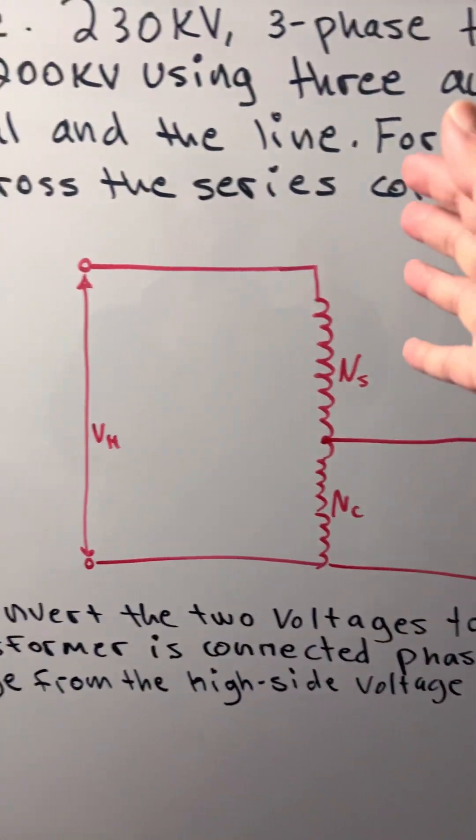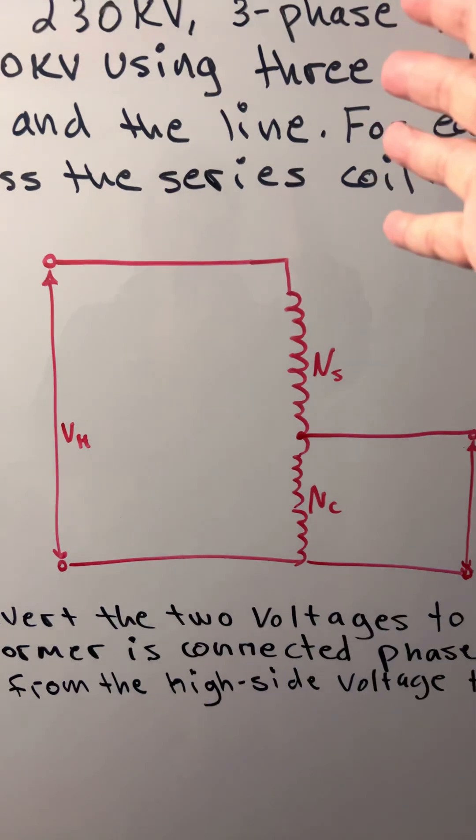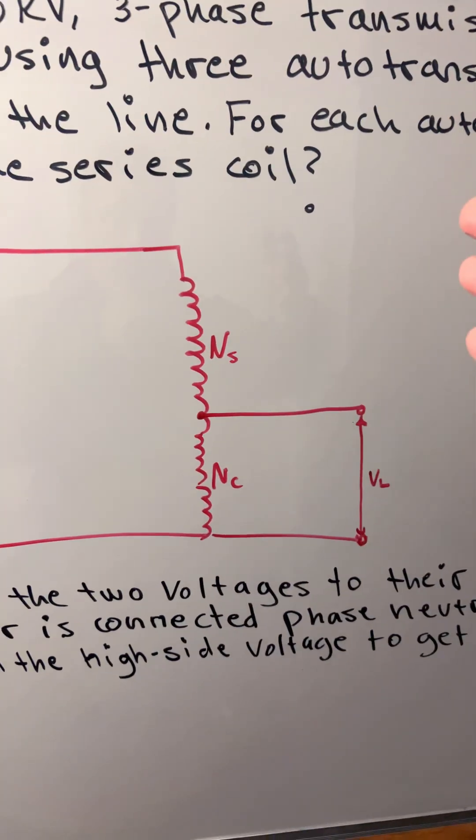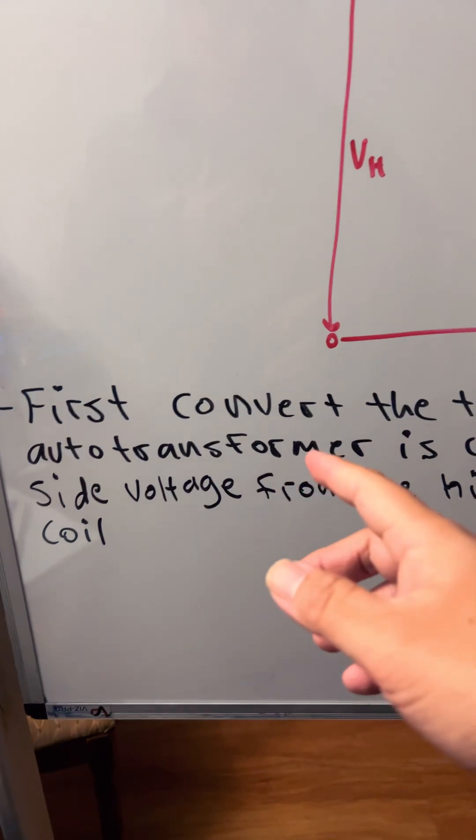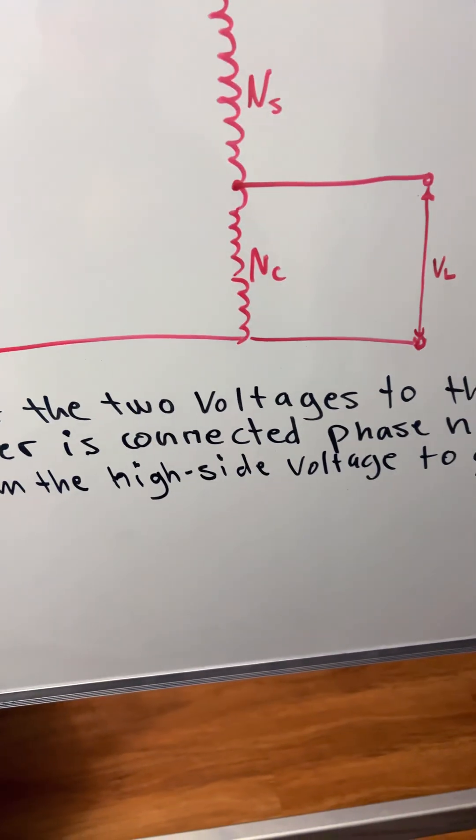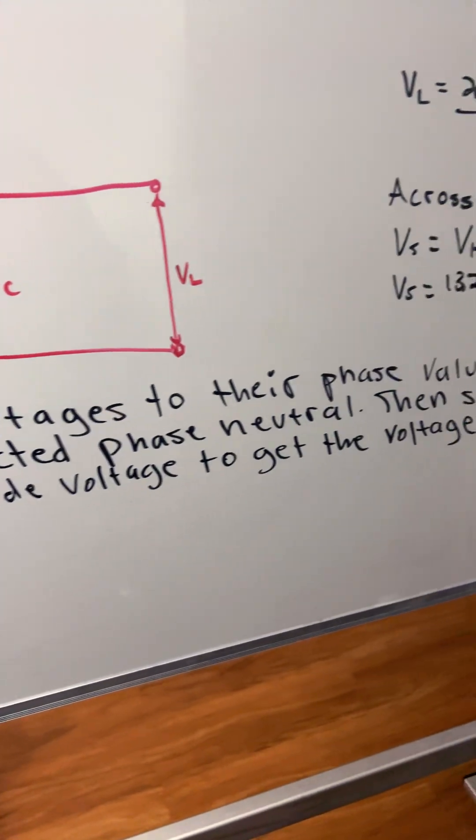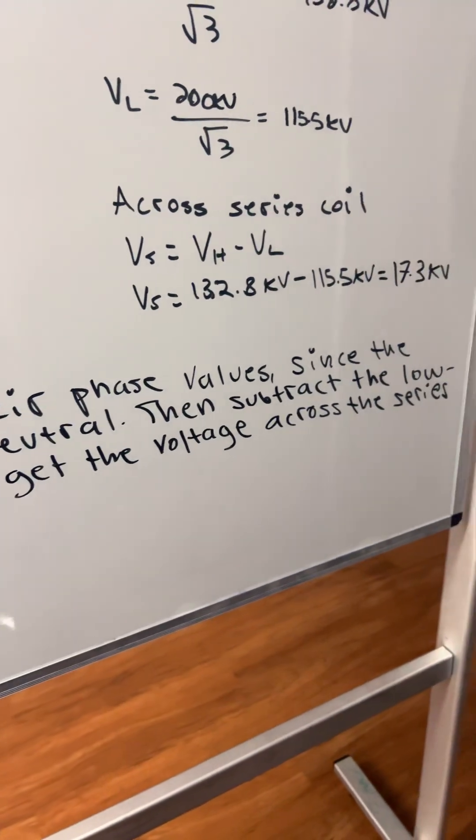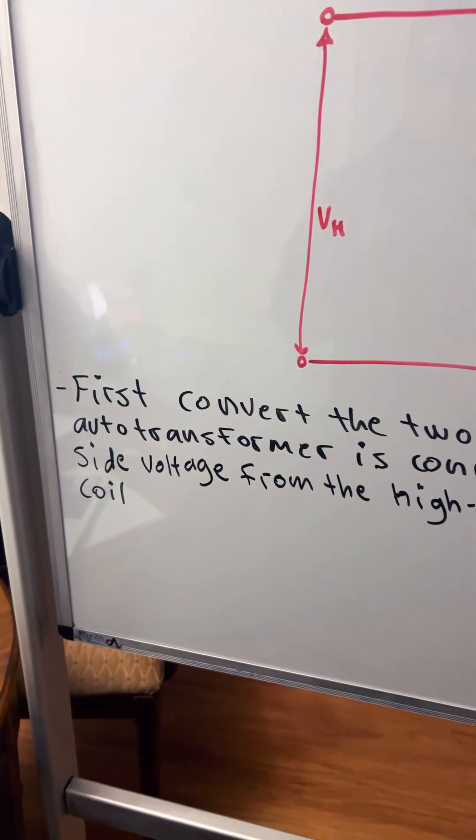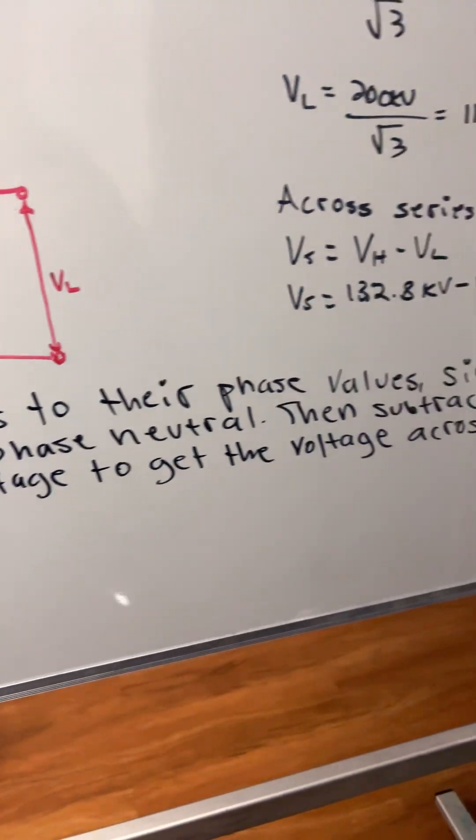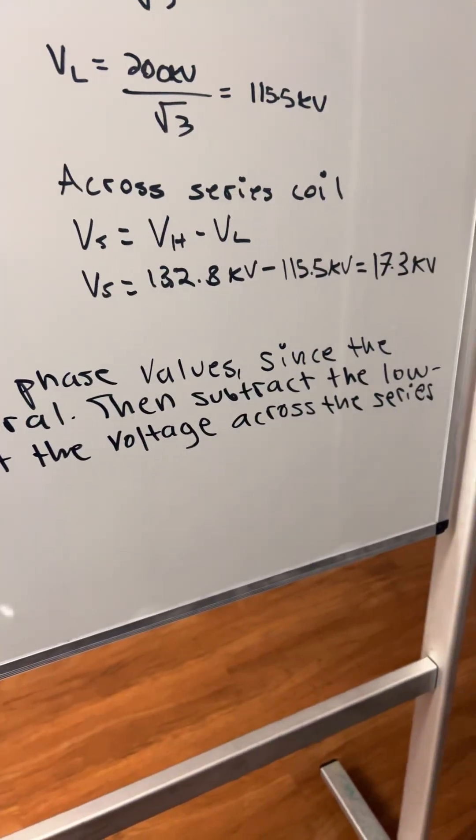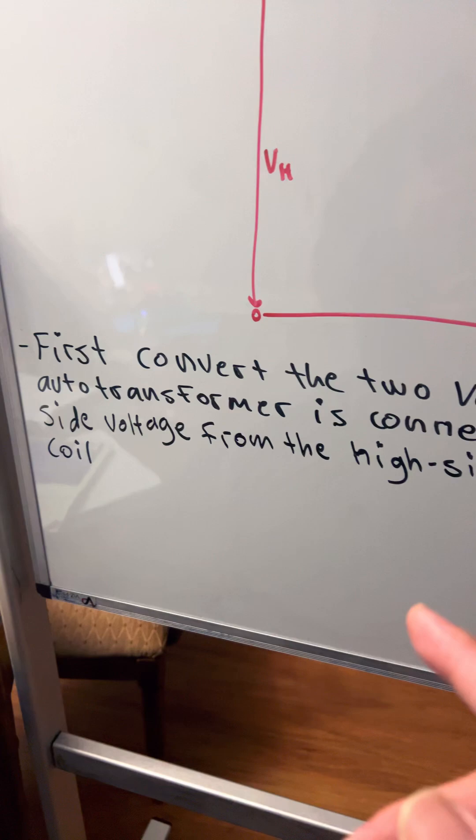So we have the high voltage, the series coil, and then the low voltage. First, we're going to convert the two voltages to their phase values since the auto transformer is connected phase neutral, then subtract the low side voltage from the high side voltage.